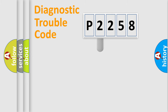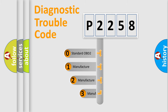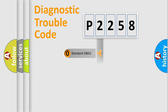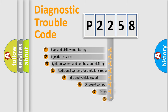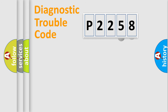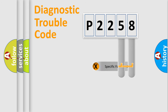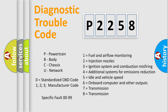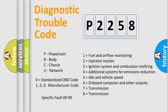This distribution is defined in the first character of the code. If the second character is expressed as zero, it is a standardized error. In the case of numbers 1, 2, or 3, it is a more manufacturer-specific expression of a car-specific error. The third character specifies a subset of errors. This distribution is valid only for the standardized DTC code, and only the last two characters define the specific fault of the group. This division is valid only if the second character is expressed by the number zero.